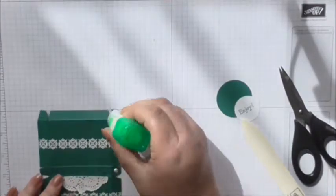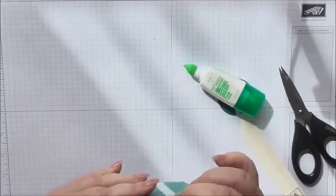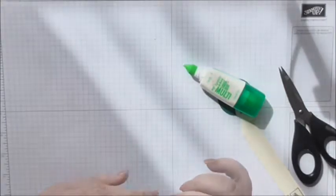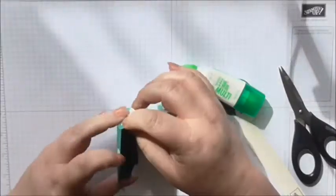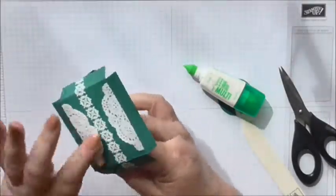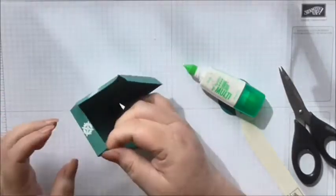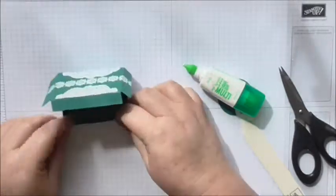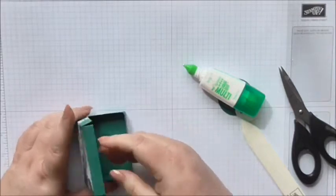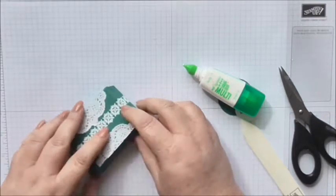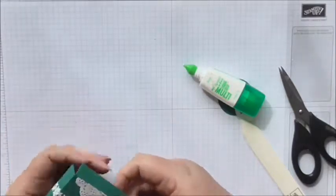And what you're going to do is just put a little bubble glue on each of these four tabs and then bring your box base together.